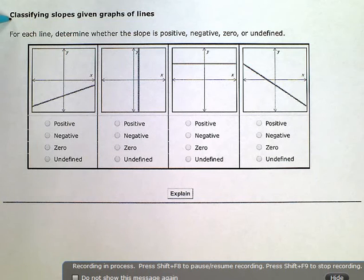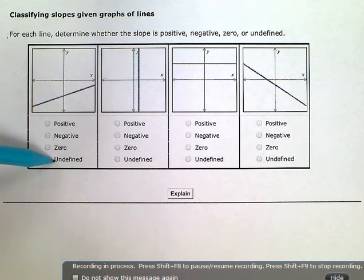Classifying slopes given graphs of lines. For each line, determine whether the slope is positive, negative, zero, or undefined. So we have those four choices: positive, negative, zero, and undefined for each one of these graphs.